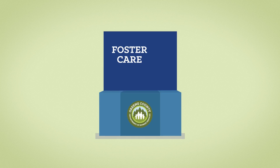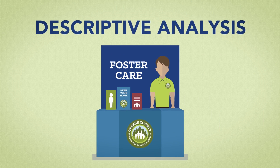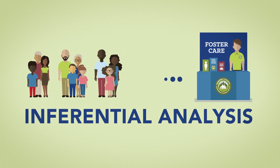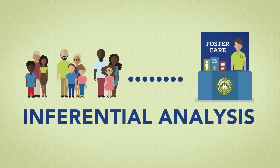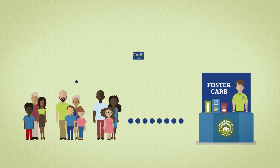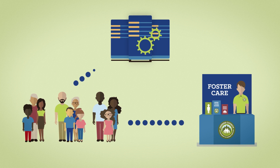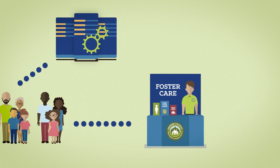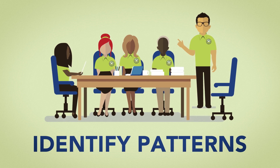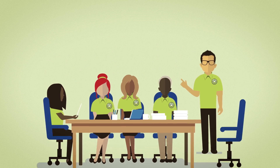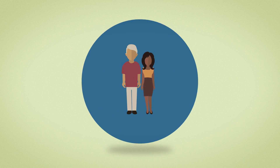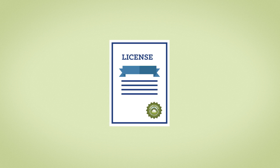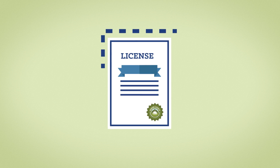Greene County used descriptive analysis to track recruitment efforts and inferential analysis to link the number of licensed resource families and their family characteristics with permanency data stored in its child welfare information system. Members of the implementation team noticed a pattern: a large percentage of families who initiated licensing never completed the process. They suspected there were barriers to licensing.